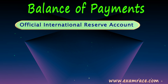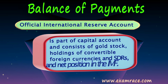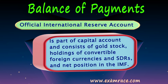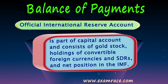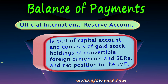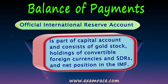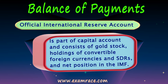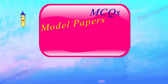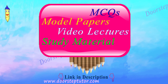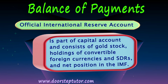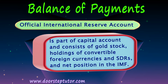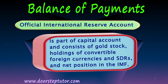The third account is the official reserves account. It is part of the capital account but is recorded under a separate column. It includes the gold stock of the country, holdings of convertible foreign currencies, Special Drawing Rights (SDRs) issued by the IMF, and the net position in the International Monetary Fund. The official reserves account tells us about the foreign currency and securities held by the government — usually the central bank — and it is used to balance payments from year to year.